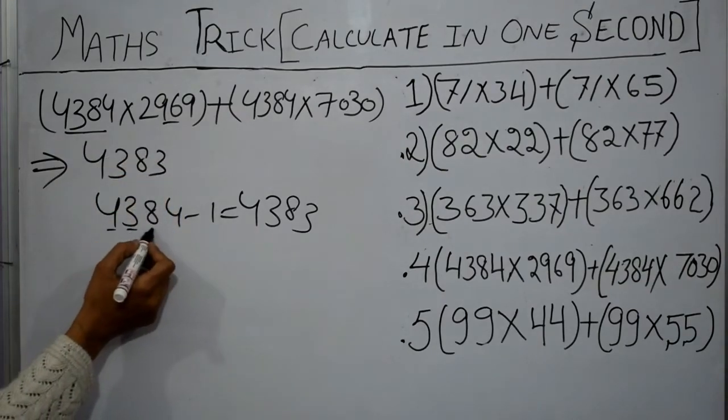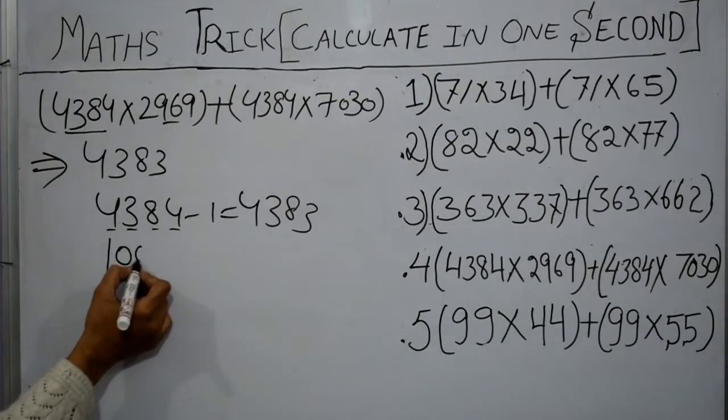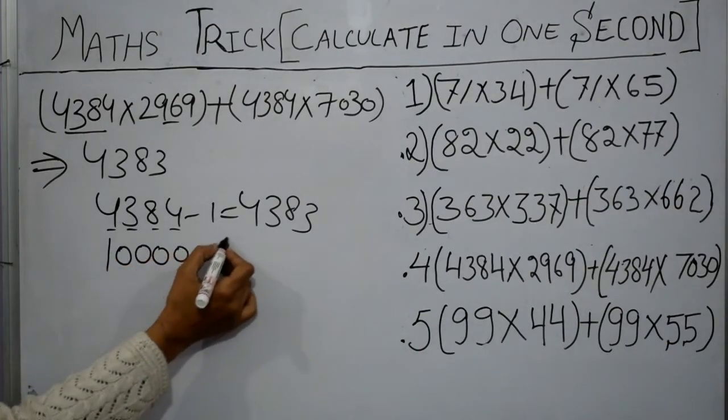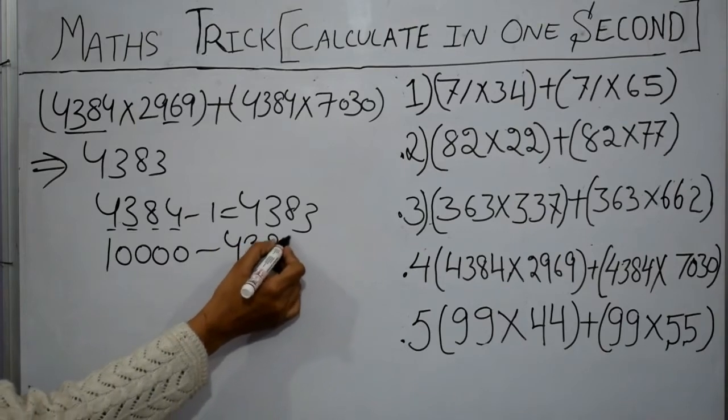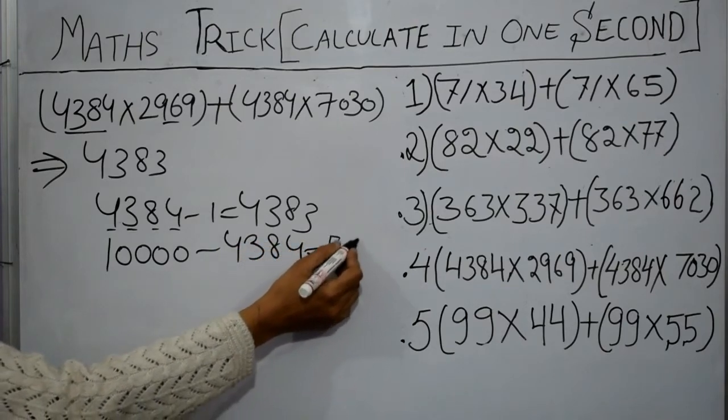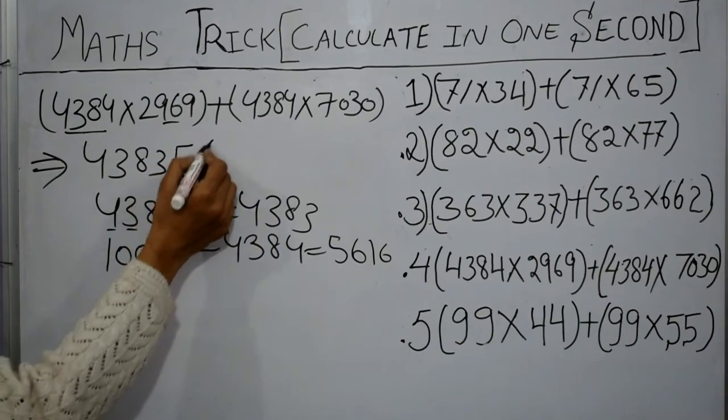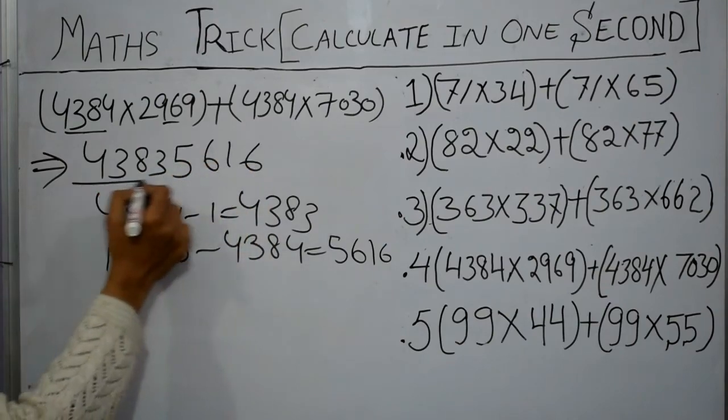Since these are four digits, now we will subtract it from 10000. We got 5616 and this is our answer.